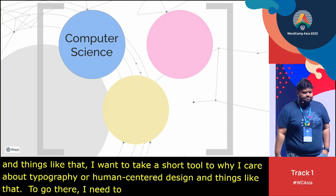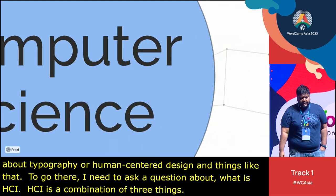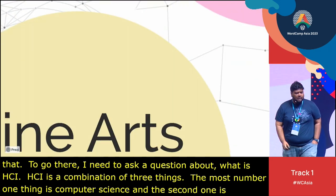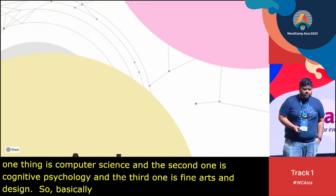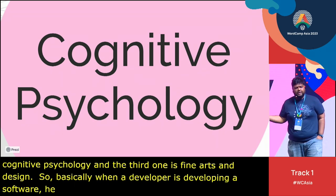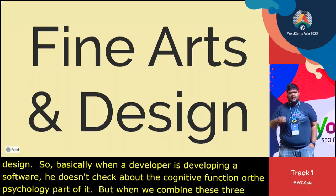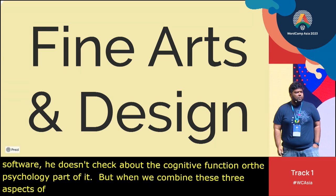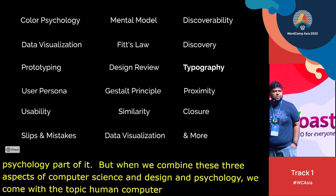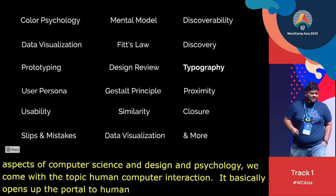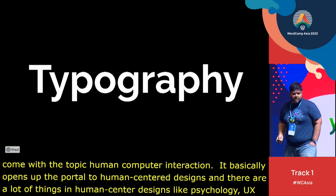HCI is a combination of three things: computer science, cognitive psychology, and design. When a developer is developing software, he doesn't always consider the cognitive function or the psychology of how the user is going to use it. But when we combine these three aspects — computer science, design, and psychology — we arrive at human-computer interaction, which opens up the portal to human-centered designs. There are a lot of things in human-centered designs, like color psychology, mental models, UX laws, usability, and more. But today, I'm going to talk about typography.